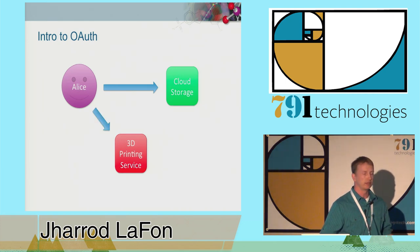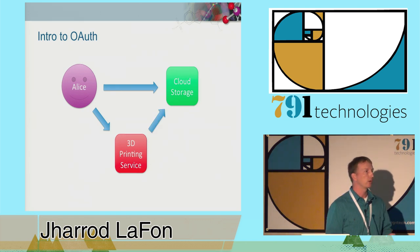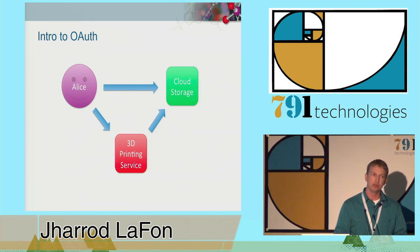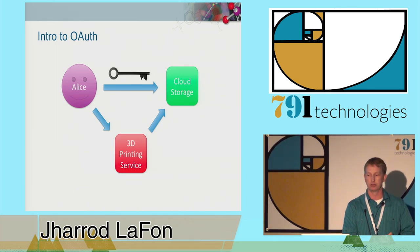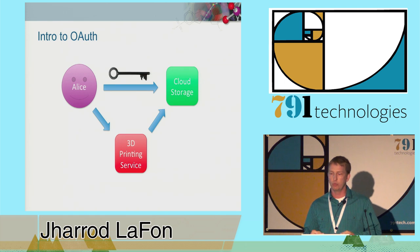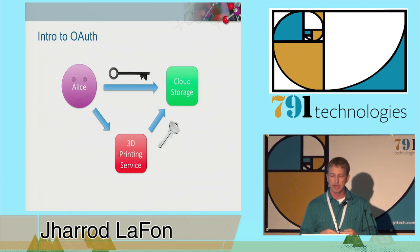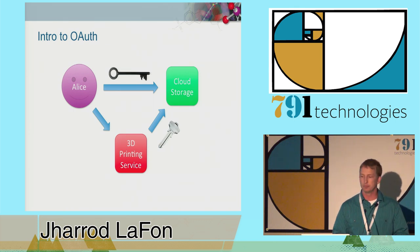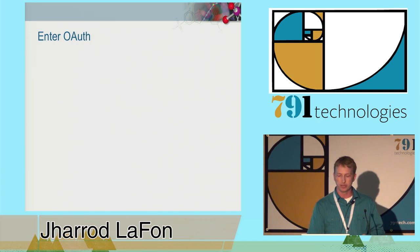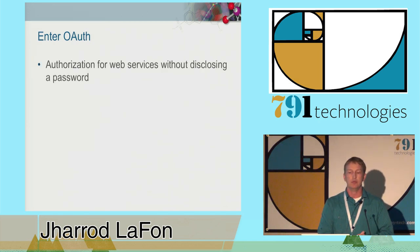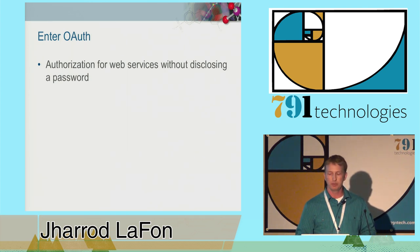There is a service out there that will do that for her. This service needs to be able to access those designs in order to print them, and Alice could upload a copy of each design every time she wanted to print one. But it would be more convenient if that service were allowed to access those designs directly. She's not going to give her password to that 3D printing service—that would be foolish. What she needs instead is a way to tell the cloud storage service that this 3D printing service can access these designs in a controlled and secure manner. That is what OAuth was designed for.